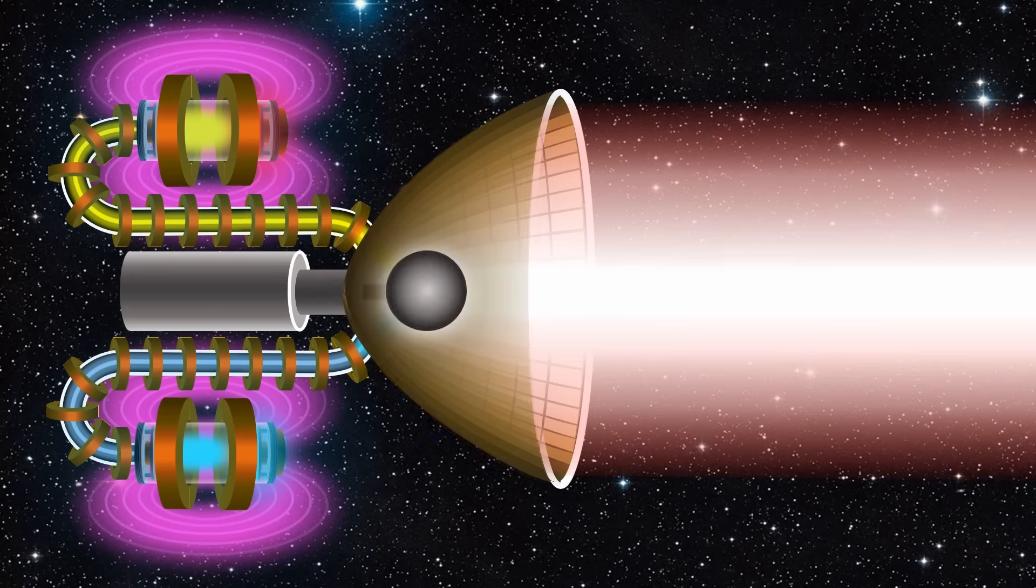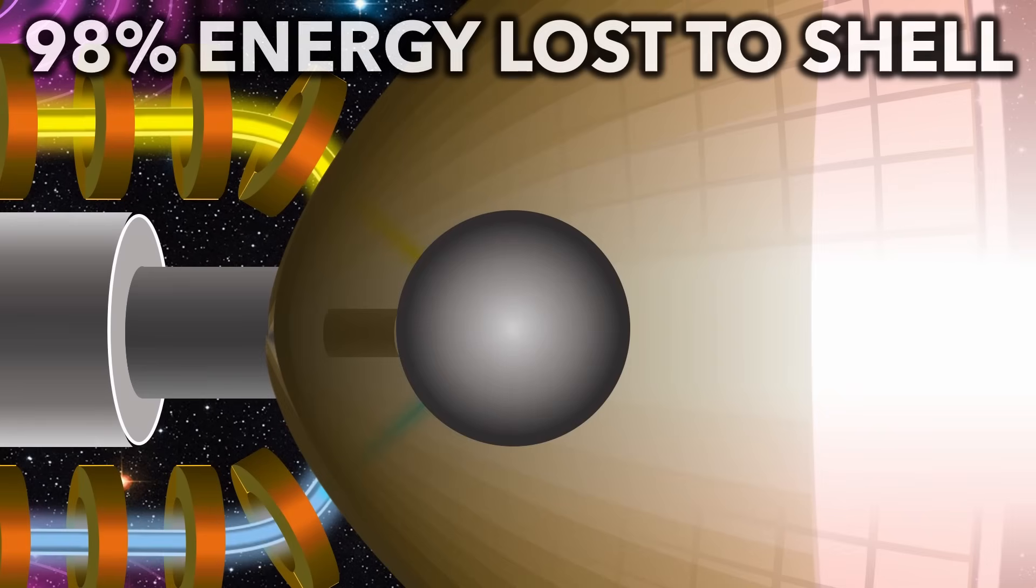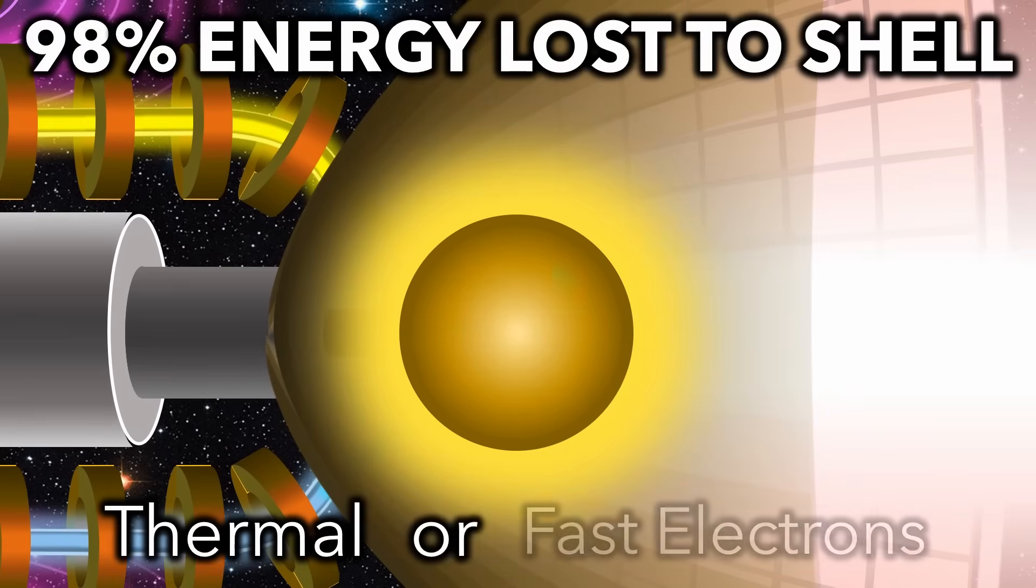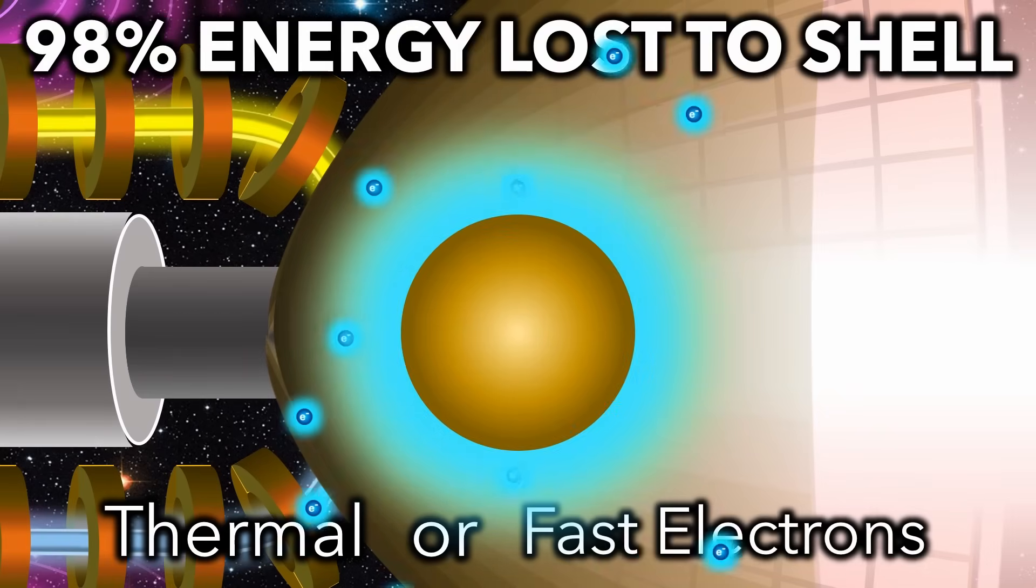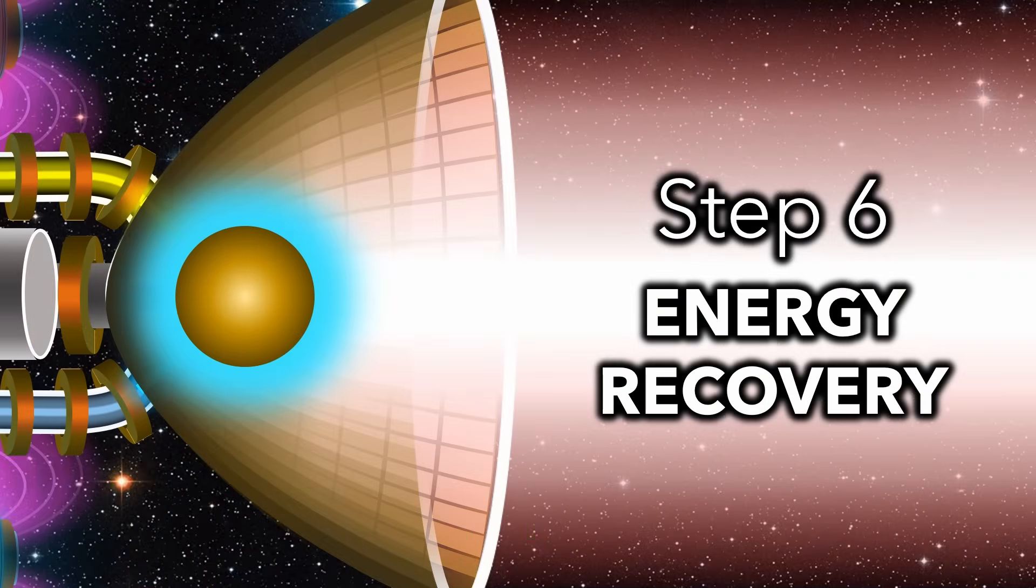However, the gamma rays have lost 98% of their energy to the lead shell, either as heat or as very fast scattered electrons, depending on the shape of the shell. So how can we regain some of this energy as thrust?